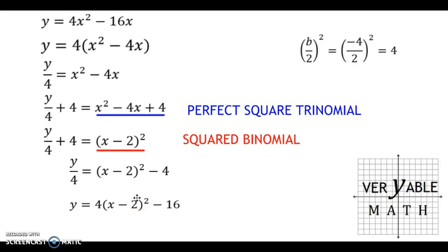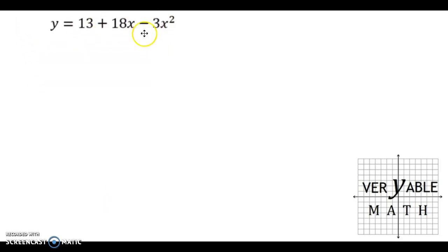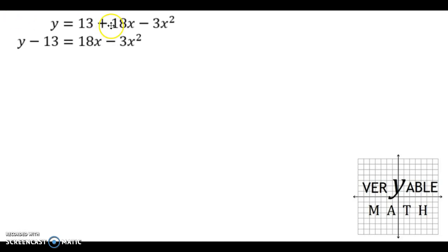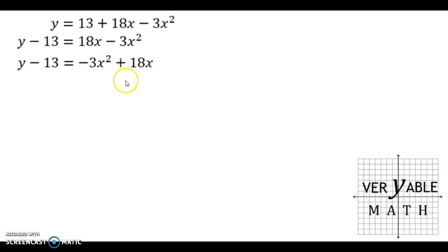Last but not least, we'll take a look at one other quadratic in standard form to convert to vertex form. This problem has a negative 3 as the a value, it's rearranged so x squared is not the first term, and not all three numbers share a common factor — 3 and 18 do, but 13 does not. We first move the c value out, then rearrange so x squared is first, then get the negative 3 out so we can work on the problem. I subtracted the 13 from both sides first. Now I rearrange to standard form with x squared first and x second.